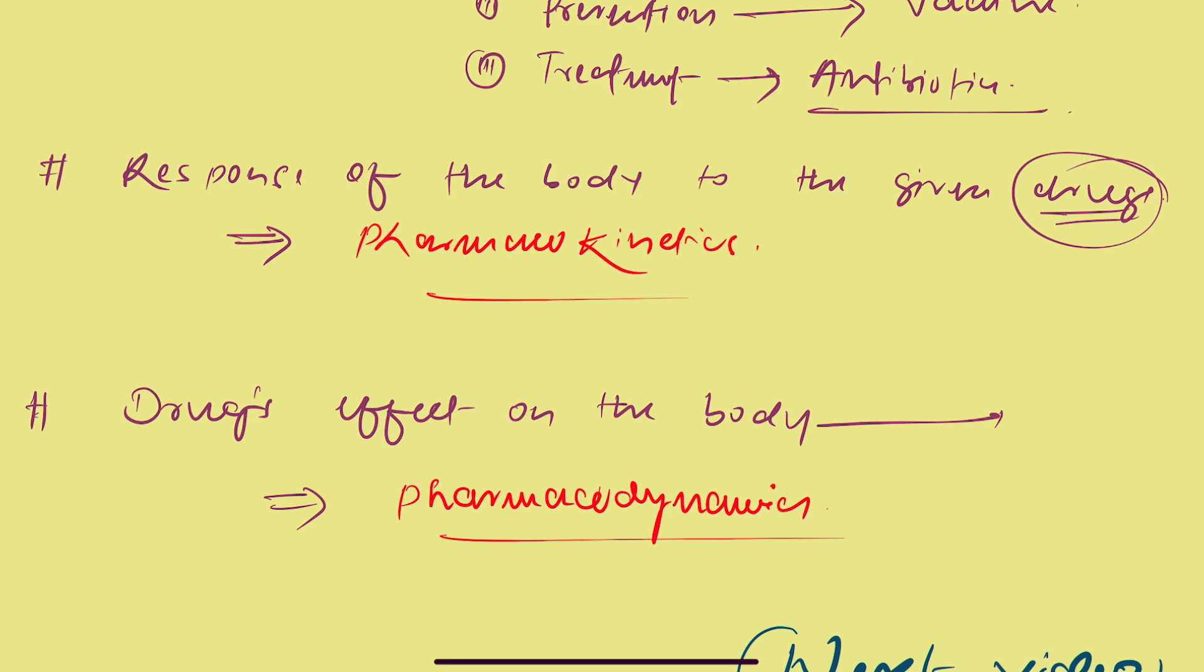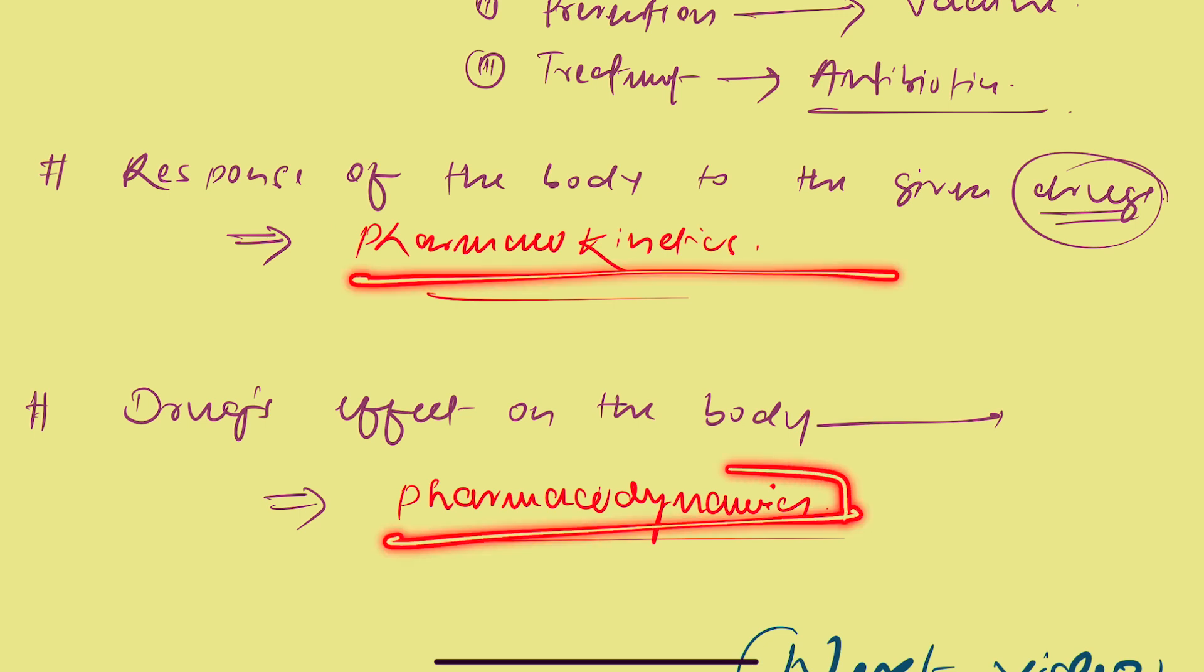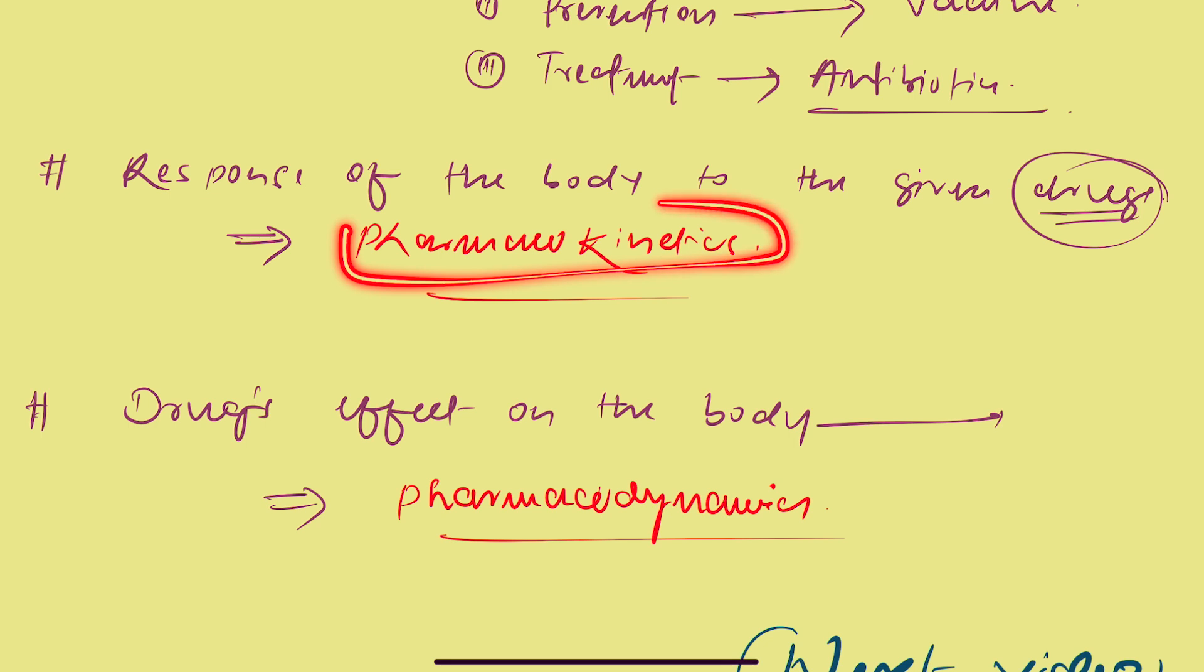So now we have two very important parameters of pharmacology, that is pharmacokinetics and pharmacodynamics. These are very important.